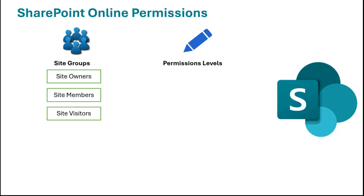The site members have edit permission on the site. A site member can edit and upload documents, edit and delete list items and documents, but he cannot delete the site and cannot manage permissions or the recycle bin. A site visitor has read-only permission — they can view the site and documents in a document library and download documents, but cannot make any changes within the site. These three groups are created by default when we create a SharePoint site.